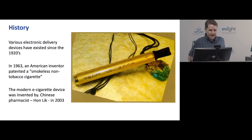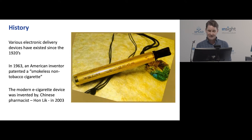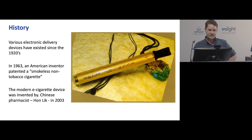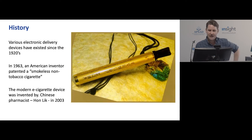Starting with the history of these devices — they've actually been around for a really long time. Different types of vaping-like devices have existed since at least the 1920s. In 1963 there was a smokeless non-tobacco cigarette patented in the United States. The image on screen is from one of the first modern e-cigarette devices, invented by a Chinese pharmacist in 2003 whose father passed away from smoking-related disease, which prompted him to develop a device safer than combusted tobacco.